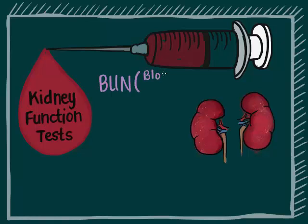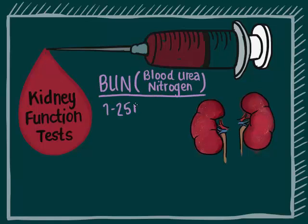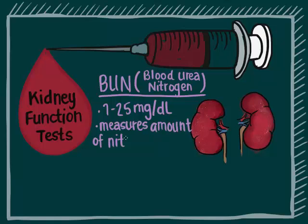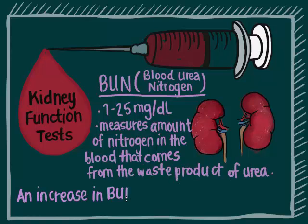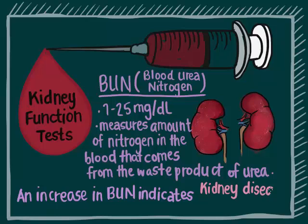BUN, or blood urea nitrogen, has a normal range of 7 to 25 milligrams per deciliter. It measures the amount of nitrogen in your blood that comes from the waste product urea, a breakdown product of proteins. An increase indicates kidney disease or damage.